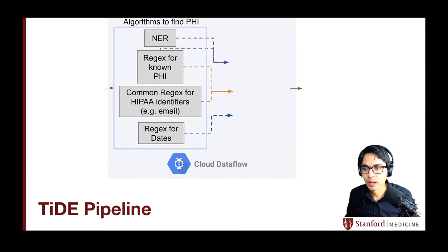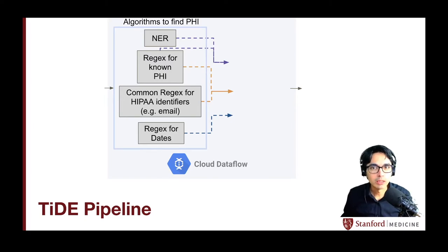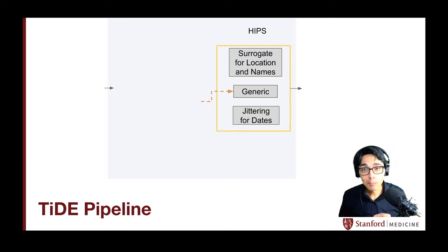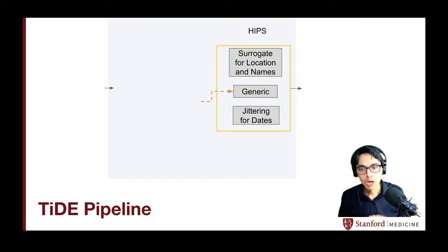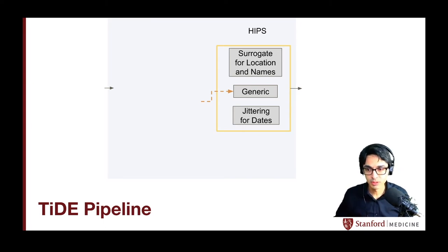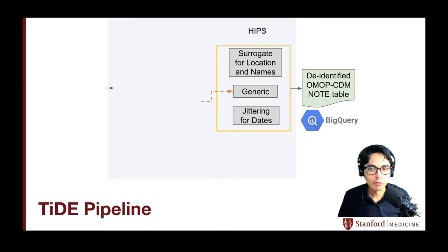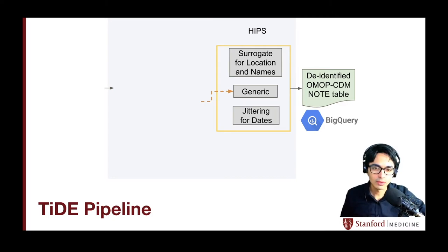We extensively use regex for dates, which are common patterns we can find there. And we use named entity recognition to find patient locations and patient names. Then, when we determine that a particular token is a location or a patient name, we replace it with a surrogate — a credible address or credible name that is sex-aware — in the clinical text. Or, if it's another identifier that is not a date, we use a generic replacement; we do not use masking. For dates, we jitter them by shifting by a fixed integer amount. Then we obtain a fully de-identified OMOP CDM note table that is readily accessible in the same BigQuery dataset.